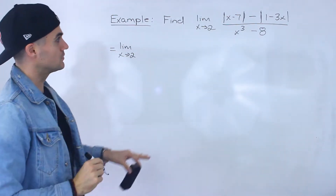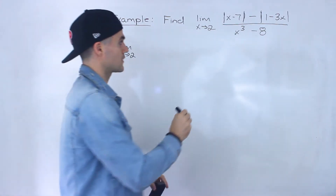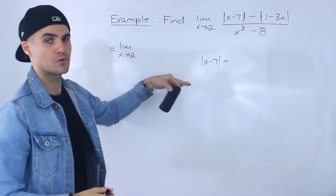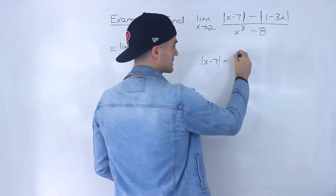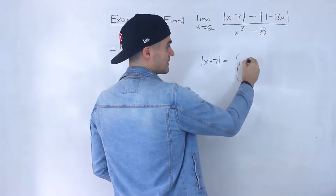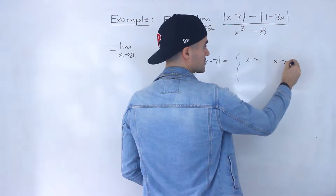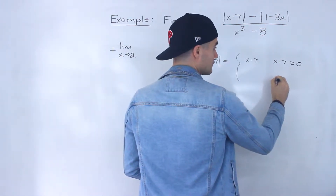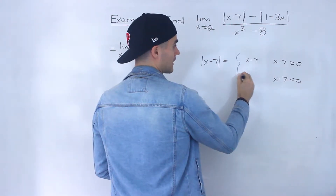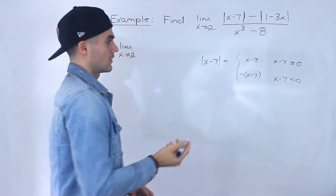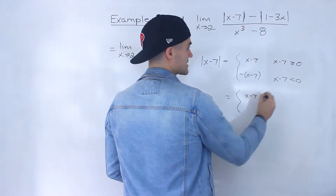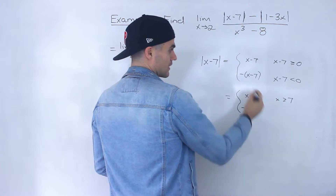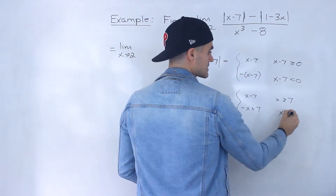To begin, I want to talk about the absolute values separately. Starting with the absolute value of x minus 7 — as mentioned in previous videos, an absolute value function can always be converted to a piecewise function. This absolute value of x minus 7 stays as x minus 7 when that expression is greater than or equal to 0, i.e., when x is greater than or equal to 7. However, if x minus 7 is negative — when x is less than 7 — we multiply by negative 1, giving negative x plus 7.